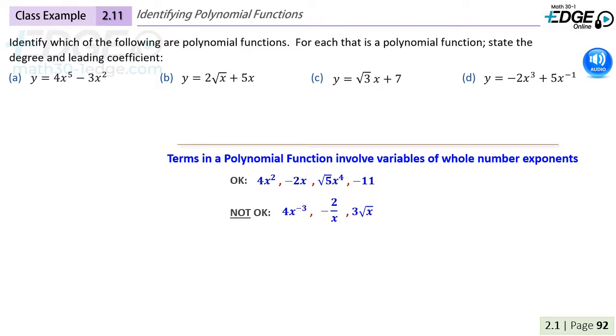Let's remind ourselves that in a polynomial function, it is okay for us to have any real number as a coefficient, but we can only have whole numbers for the exponents.